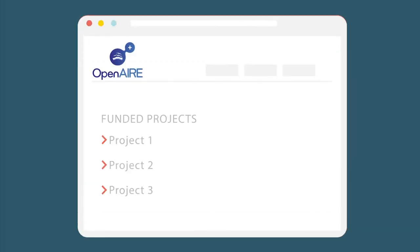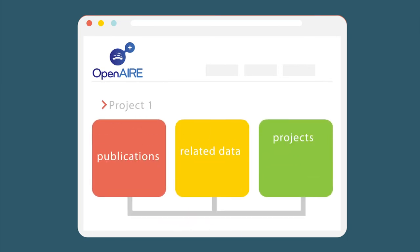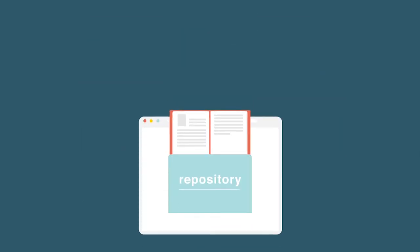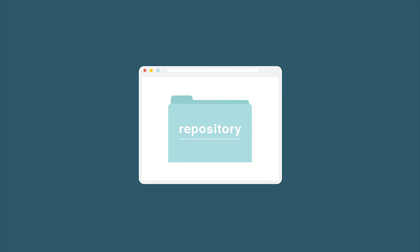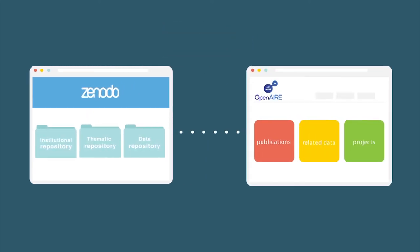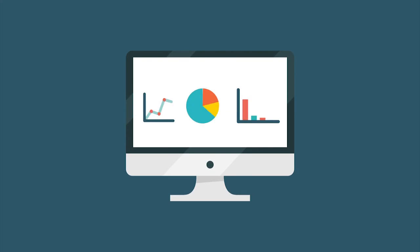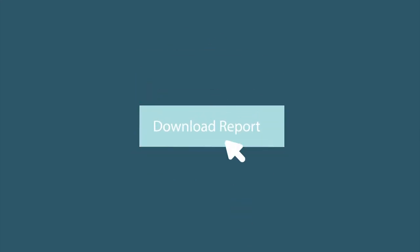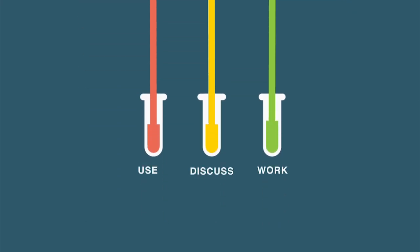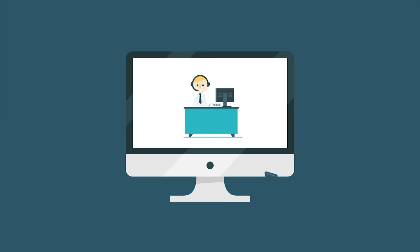At OpenAir, every project has a dedicated page where research objects like publications and related data can be easily discovered. Just deposit your research outcome into a digital repository, like Zenodo. Then link it back to your project. That's it. Now you can manage your research project effortlessly, and others can openly use, discuss and work together to gain new insights and accelerate research.